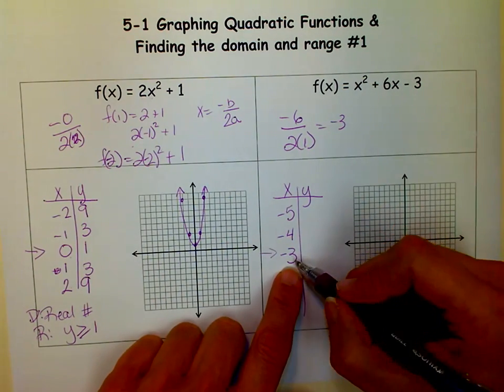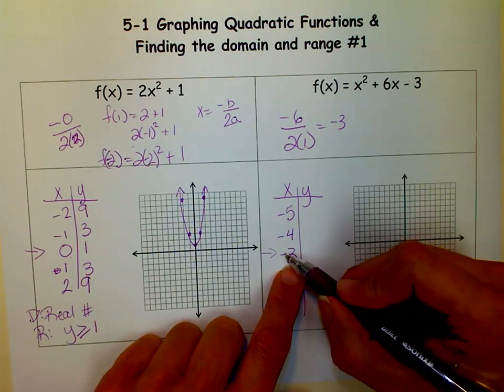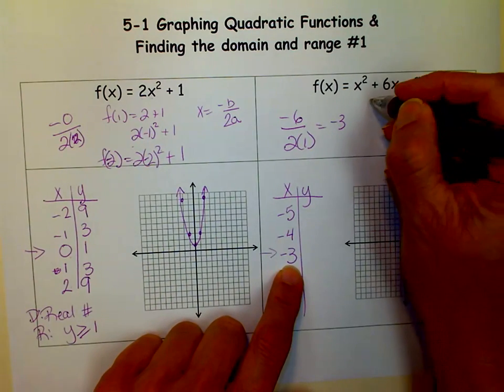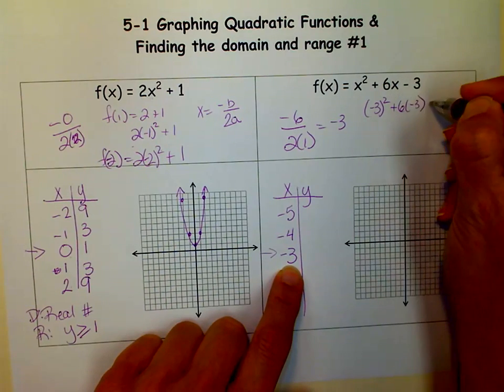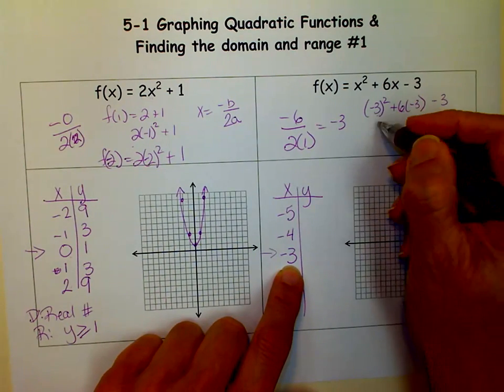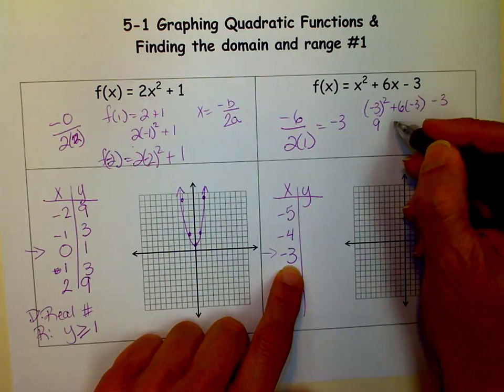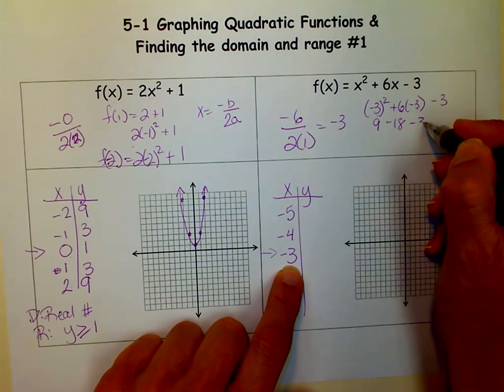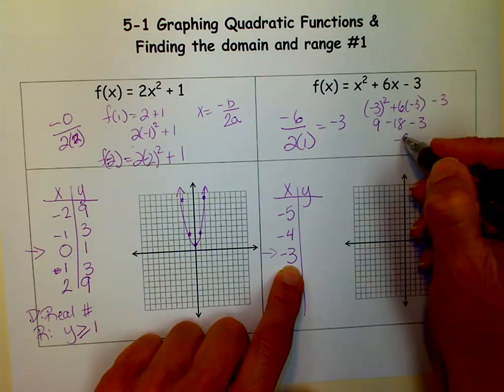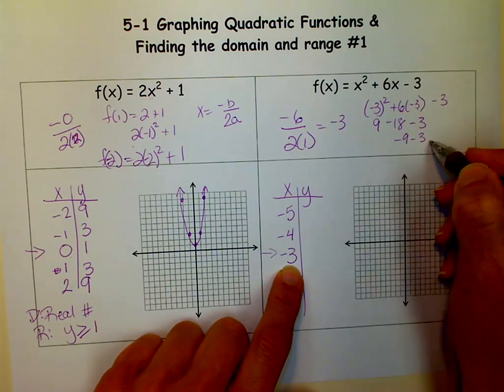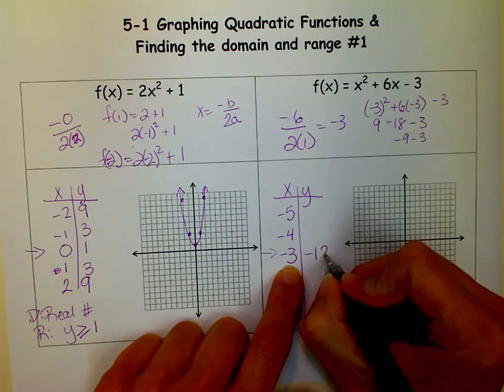And we're going to put those x values into our function and find out the y values. So let's start with the vertex because that kind of gives us the starting point. Negative 3 in there. So negative 3 squared plus 6 times negative 3 minus 3. That's 9. 6 times negative 3 is 18 minus 3. 9 minus 18 is negative 9, and negative 9 minus 3 is negative 12. So here I have a negative 12.